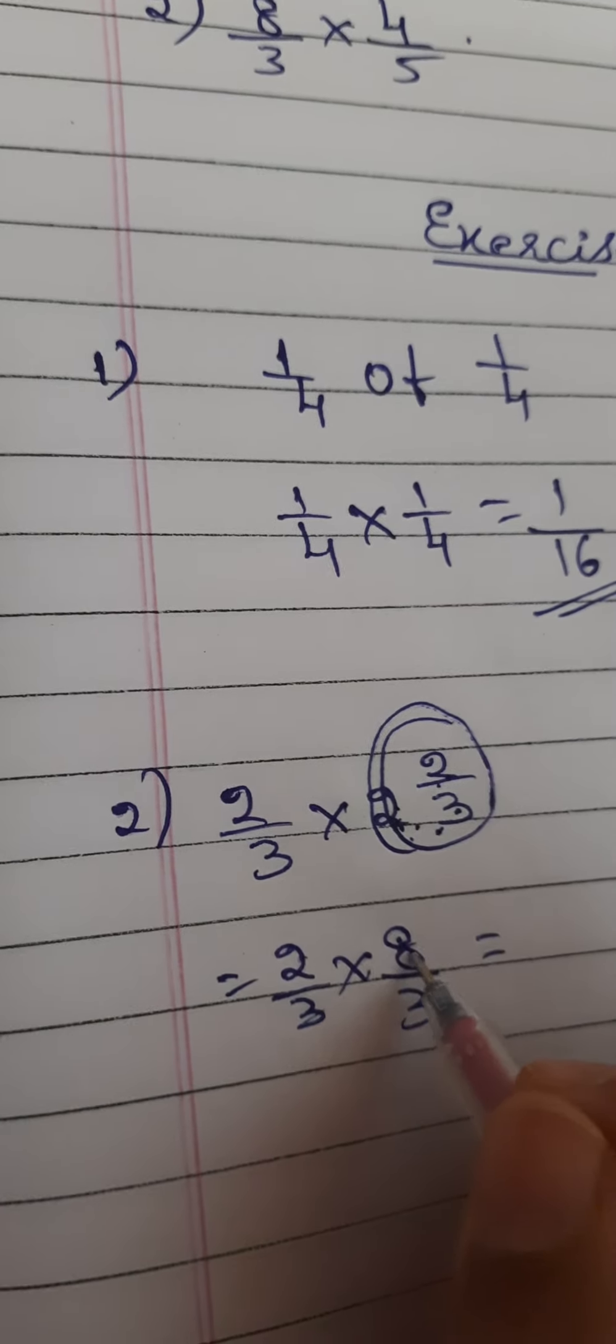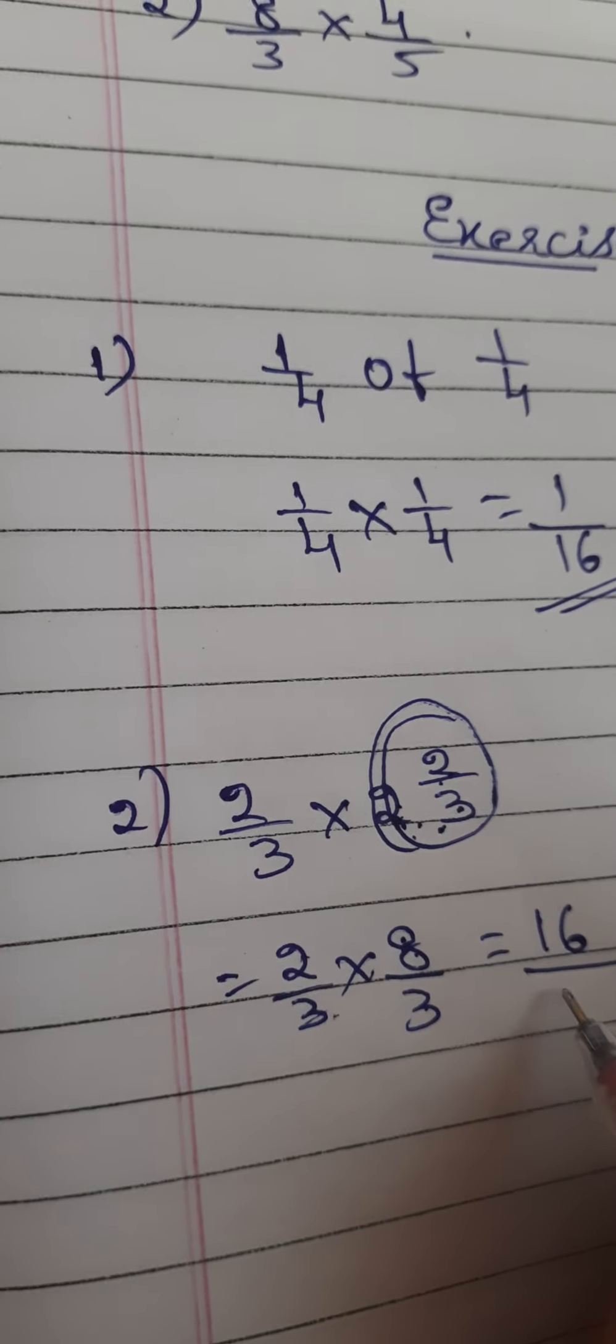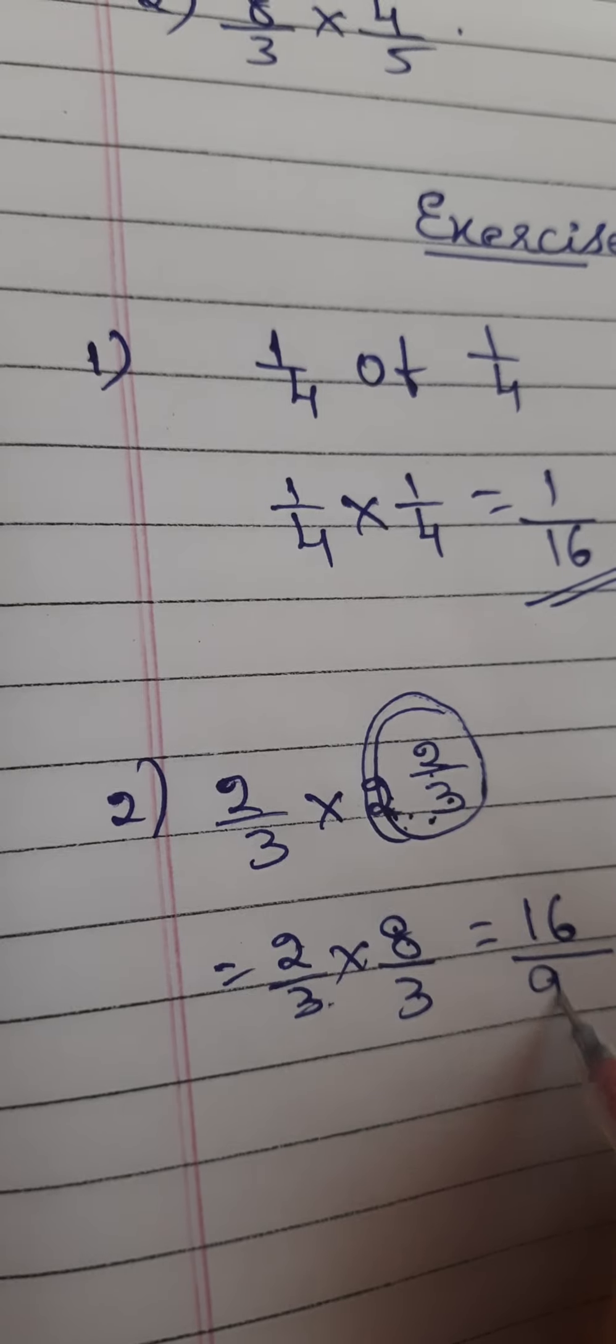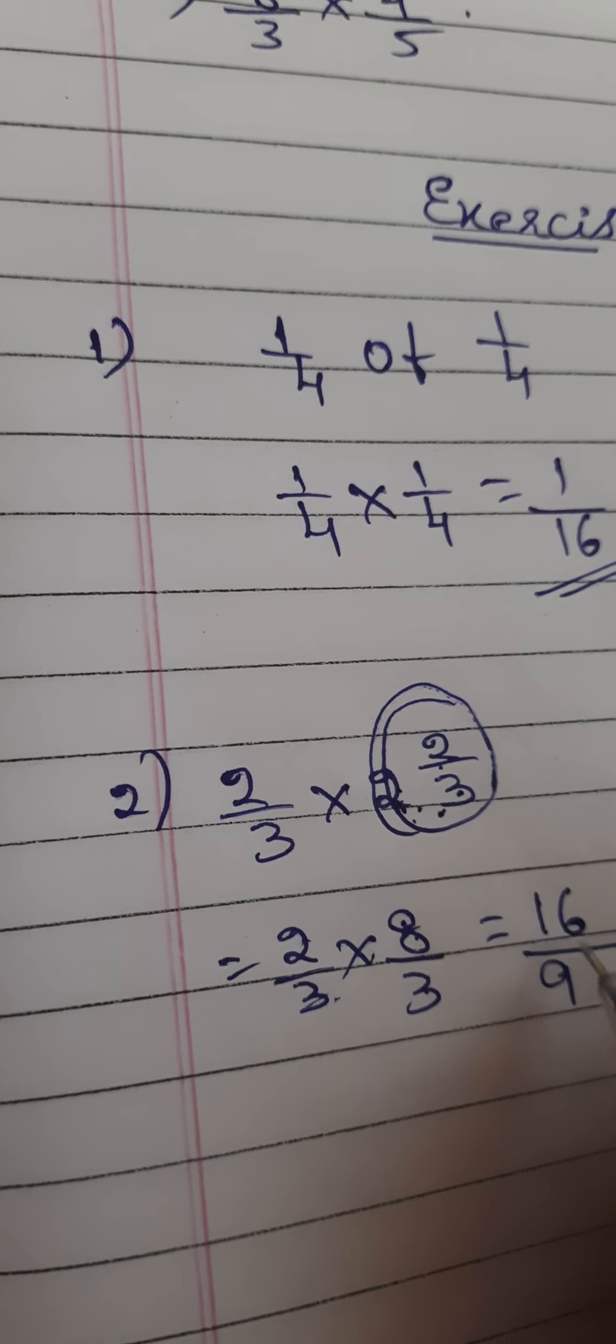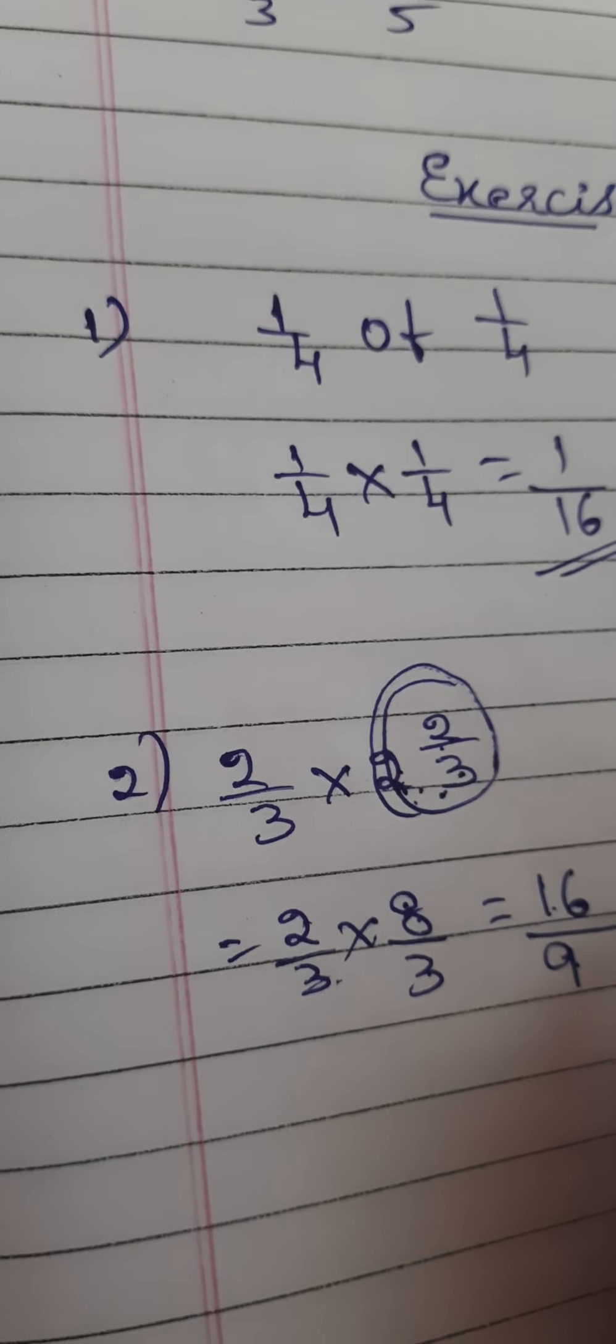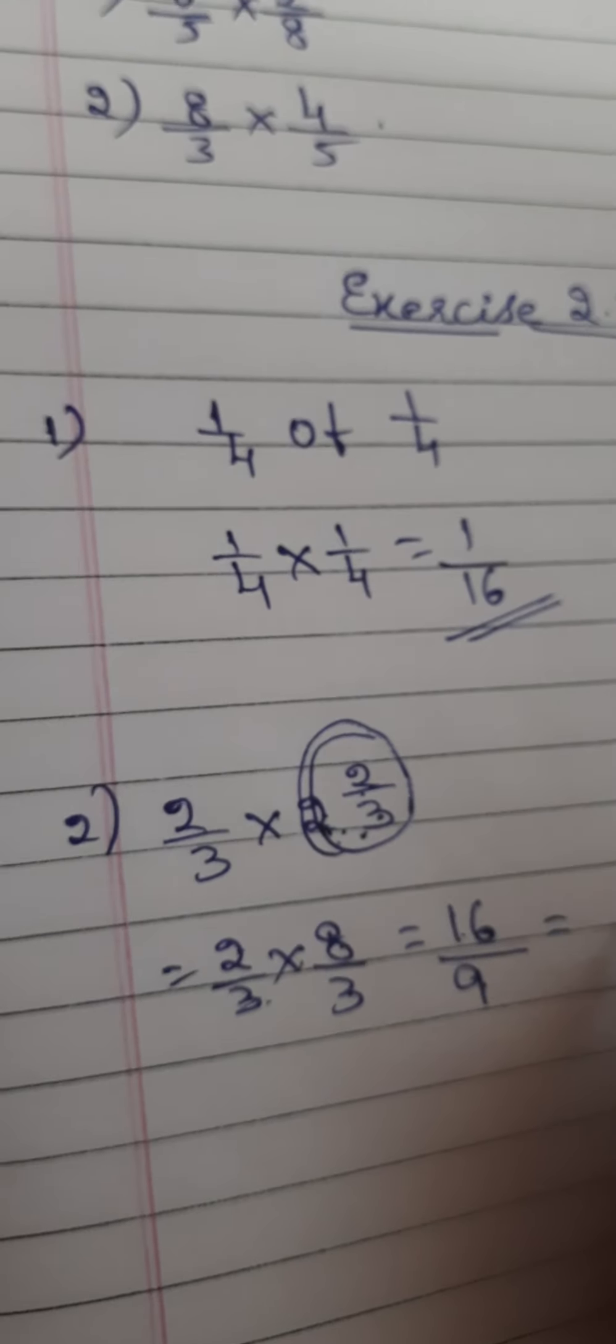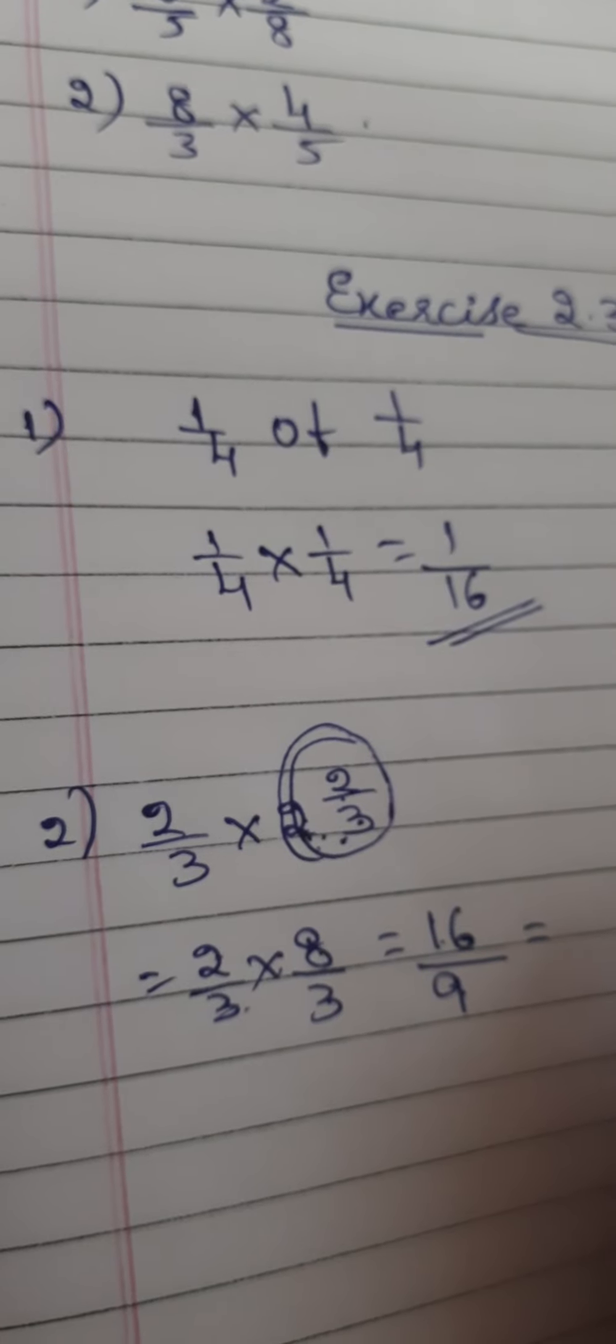That is equal to 2 × 8, how much? 16. Divided by 3 × 3, how much? 9. So here you have got 16/9. How can you write 16/9? They have told us to reduce it to the lowest form if it is possible.